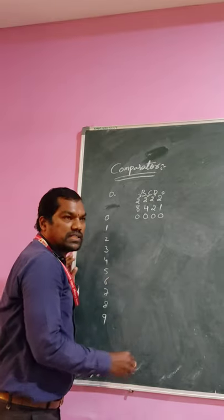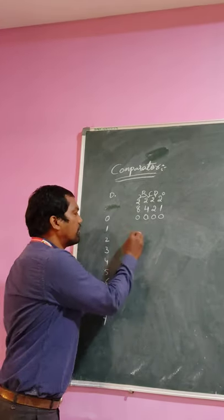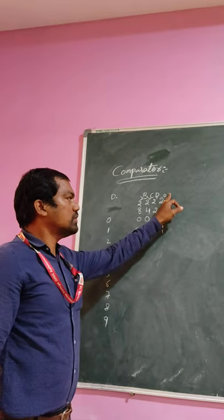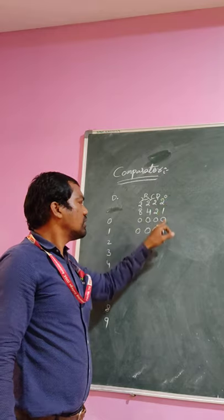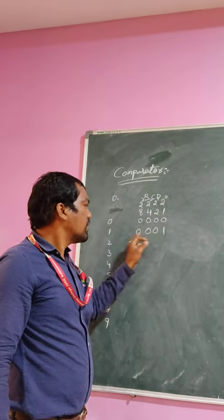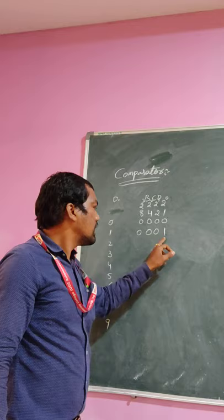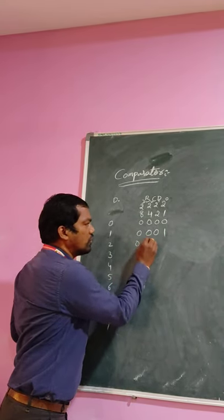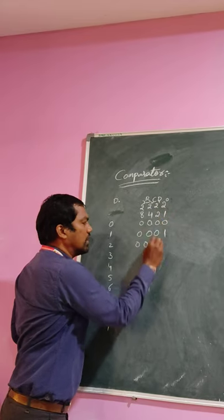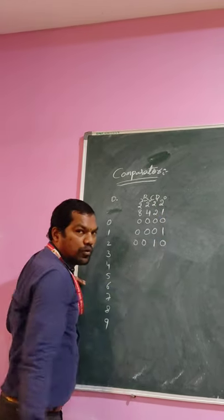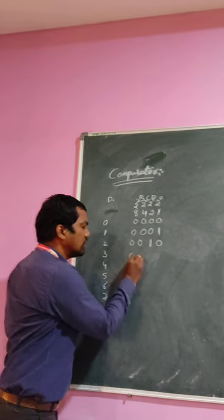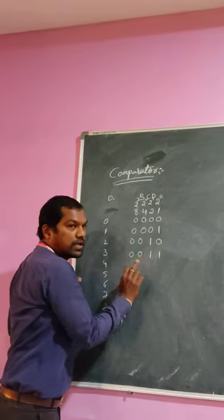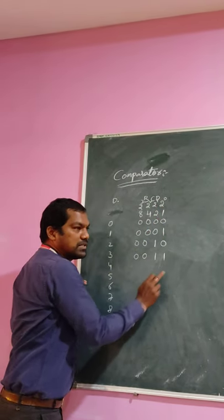Next, come to decimal number 1. For 1: 0, 0, 0, 1. 2-power-0 is anything power-0 is 1, so the last bit becomes 1 and the remaining bits become 0. Next, coming to decimal number 2. 2 is represented using 2-power-1, so here we require 1, 0 — giving us 0, 0, 1, 0. Next, 3 — that is 2 plus 1, so 0, 0, 1, 1. The BCD number for decimal 3 is 0, 0, 1, 1.